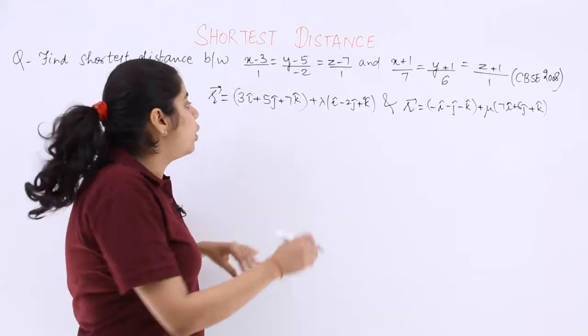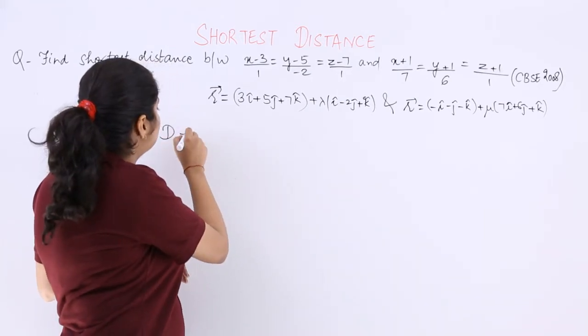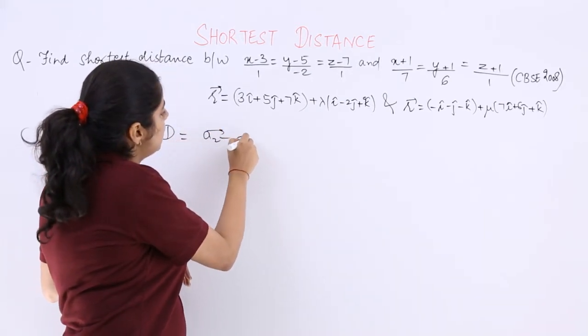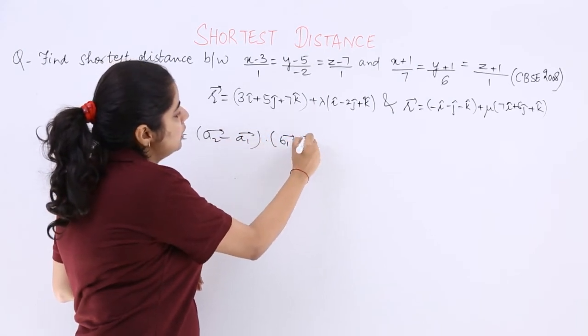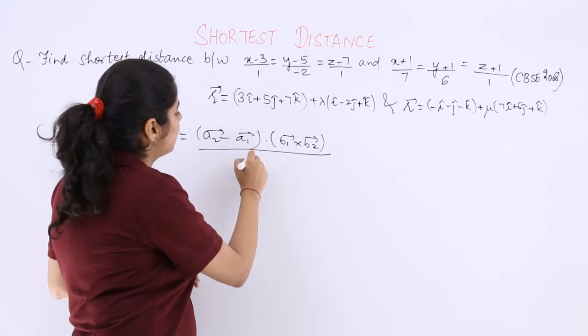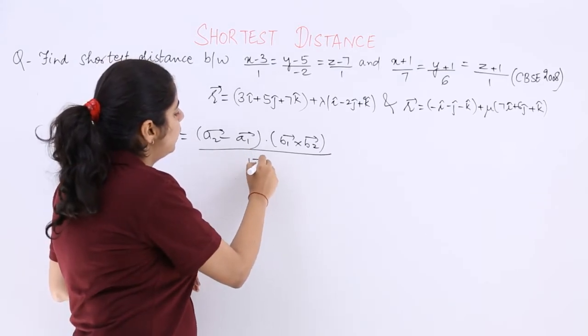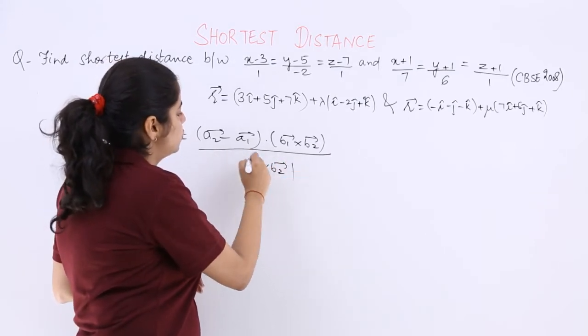So the formula of the shortest distance that you have to use is (a2-a1) · (b1 × b2) over |b1 × b2|.